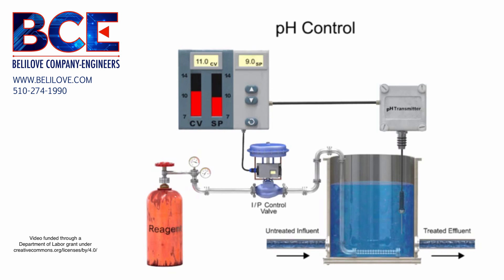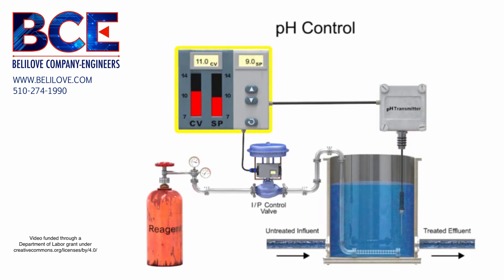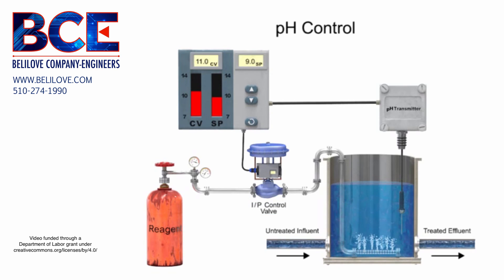With the pH level at 11 detected by the sensor, the controller commands the control valve to open and introduce more carbon dioxide. As the increased carbon dioxide mixes with the influent, the pH is lowered in a controlled manner.